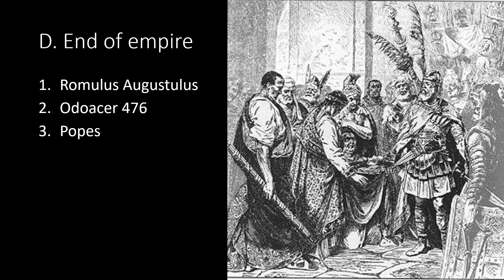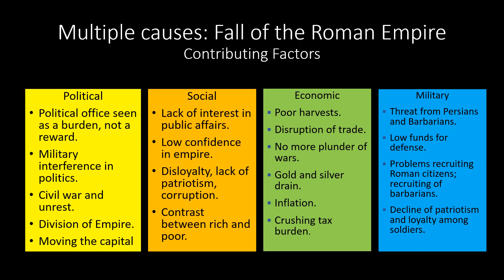Like most great empires through history, the fall always comes from within and not from the outside. Looking at the multiple causes of the fall of the Roman Empire: politically, offices were seen as a burden not a reward; there was military interference in politics with military strongmen trying to take over; constant civil war and unrest; the empire divided east and west with the east becoming more prosperous; the capital moved from Rome to Constantinople. Socially, there was a lack of interest in public affairs, people lost confidence in the empire, no patriotism, high corruption, and Germans taking over the legions.